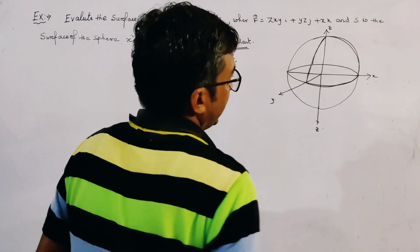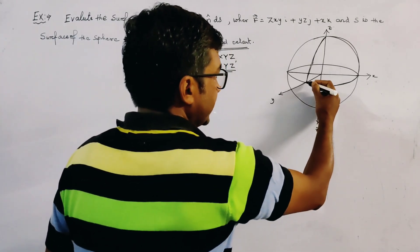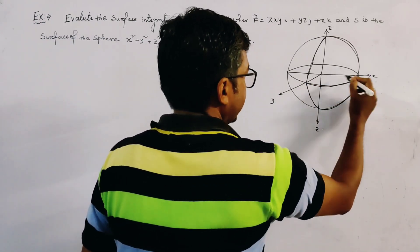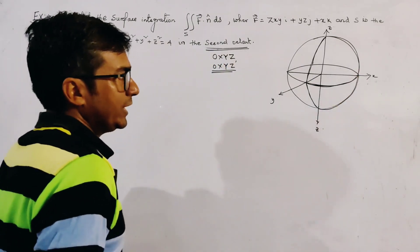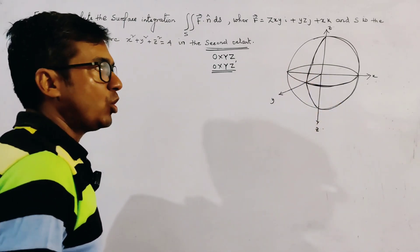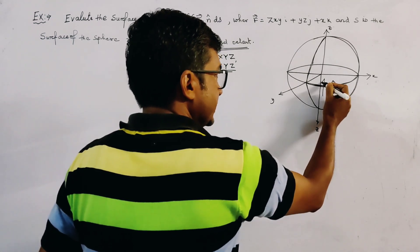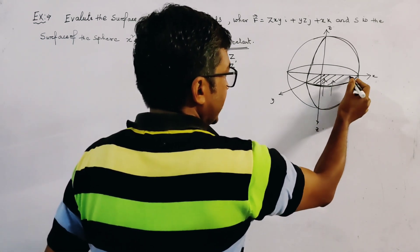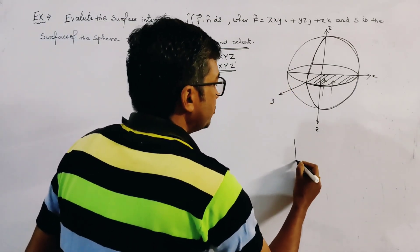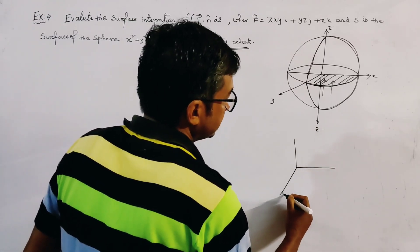As similar to the first octant, if we project this surface — for the first octant we get a surface like this — but here it is given that we have to take the second octant, so the surface is the lower side, this type of surface. If we project this surface of the sphere in the second octant onto the XY plane, then clearly the projection is this area.